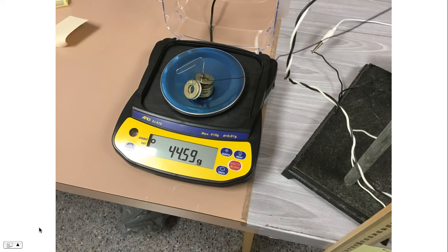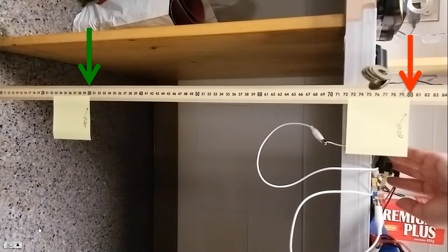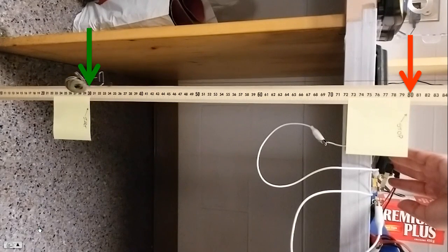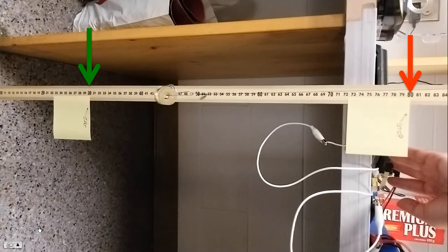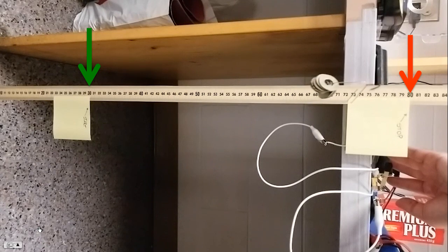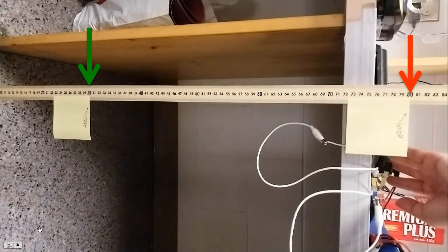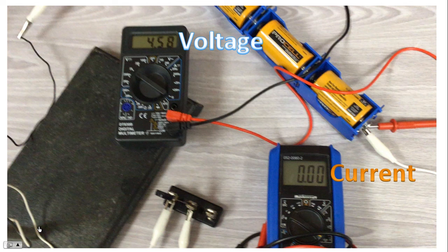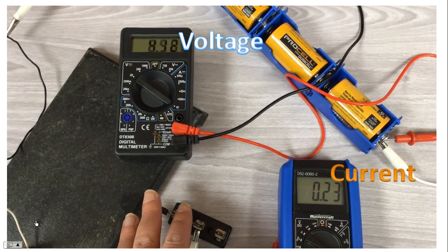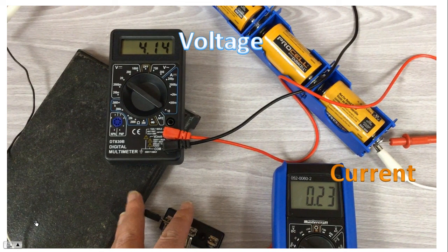Here's the next data point, 44.59 grams. Get ready with your stopwatch. Start your stopwatch at the 30 centimeter mark and stop the watch at the 80 centimeter mark. Here's the voltage and current for that data point. Again, if you play it frame by frame, it's easier to determine the voltage and current.